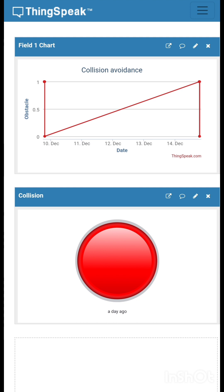When the collision occurs, the ESP module updates the information on the ThinkSpeak website. The first chart in the figure shows whether the obstacle is present or not. It also displays date of occurrence of collision. The second figure is a button which is pink in color when there is no collision and it turns red upon collision as shown in the figure.